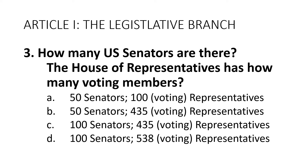Article 1: The Legislative Branch. Question 3: How many U.S. Senators are there? The House of Representatives has how many voting members? A. 50 Senators, 100 Voting Representatives. B. 50 Senators, 435 Voting Representatives. C. 100 Senators, 435 Voting Representatives. Or D. 100 Senators, 538 Voting Representatives.